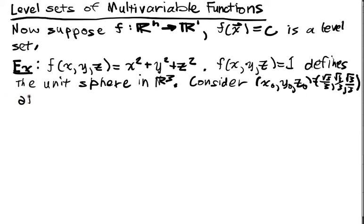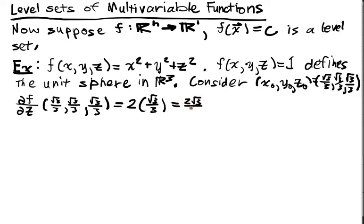And we note that df/dz at this point is equal to 2 times, well, the partial of f with respect to z is just 2z. When I plug that in, I get √3/3. So this is 2√3/3, which is not equal to 0. So the implicit function theorem tells me